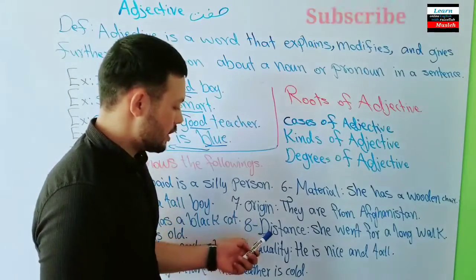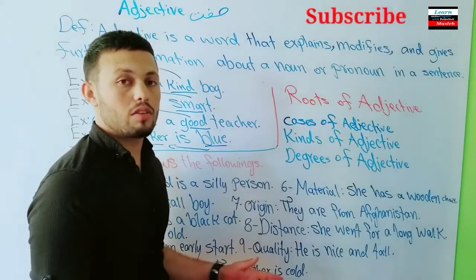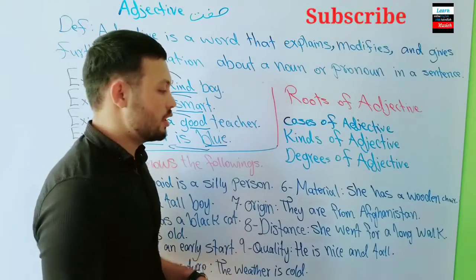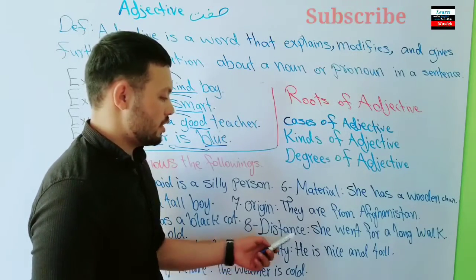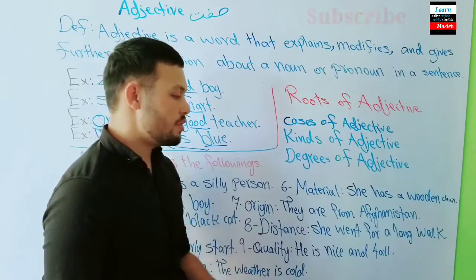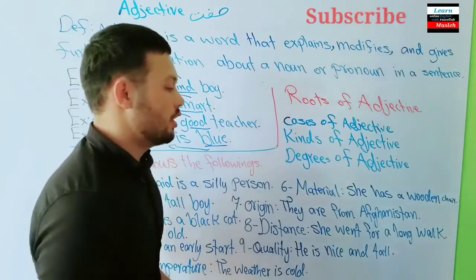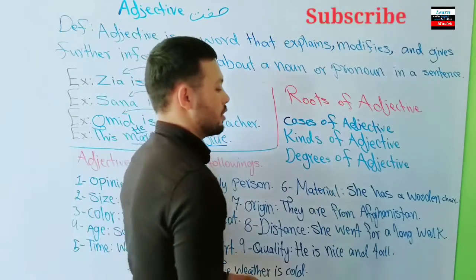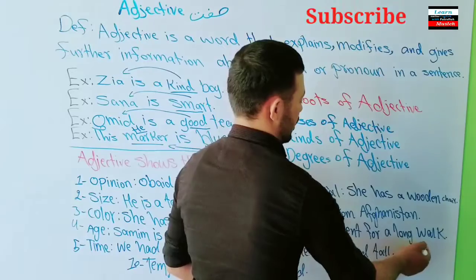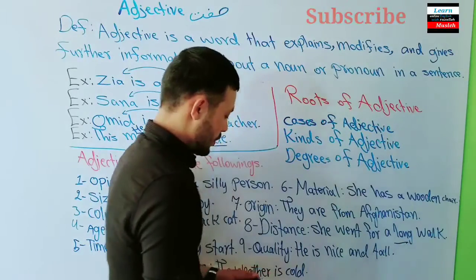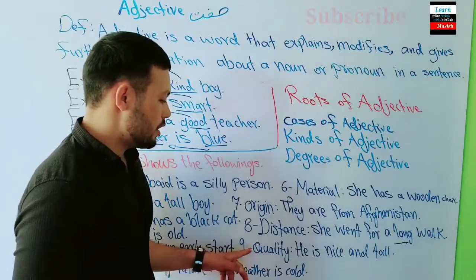Number eight: distance adjectives show how far something is — 'fasela' in Dari. For example: 'She went for a long walk.' Here 'long' is the adjective showing the distance of the walk.